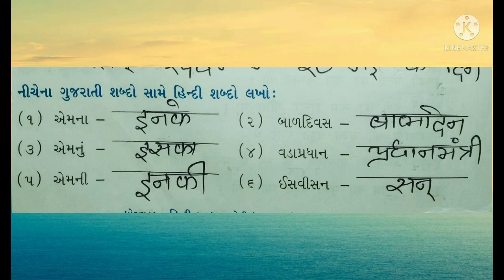બાલ દિવસ નો હિન્દી શબ્દ છે - બાલ દિન. ત્રીજો શબ્દ - એમ નું હિન્દી થશે - ઇસ્કા. ચોથો શબ્દ છે - વડા પ્રધાન, વડા પ્રધાન ને હિન્દી માં કહેવાય - પ્રધાનમંત્રી. પાંચમો શબ્દ - એ ની, એ ની - શબ્દ નું હિન્દી થશે - ઇન કી. છઠ્ઠો શબ્દ છે - ઈસ્વી સન - એ ને હિન્દી માં.